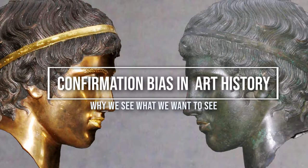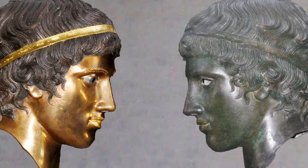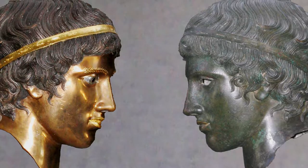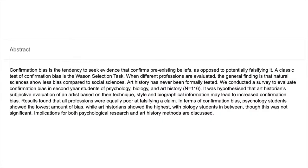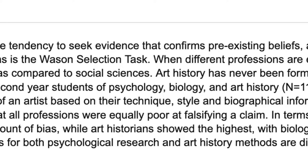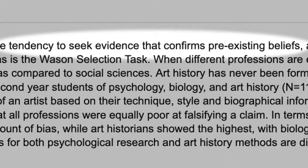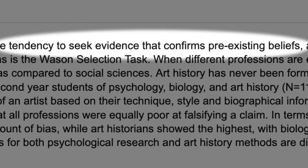Confirmation bias in art history: why we see what we want to see. Recent research has shown that art historians are not particularly good at recognizing confirmation bias. The goal of this video is to overview how confirmation bias can distort our thinking in art history. Becoming more aware of confirmation bias helps you develop the critical thinking skills to identify it in research when you encounter it, and hopefully in your own work as well.